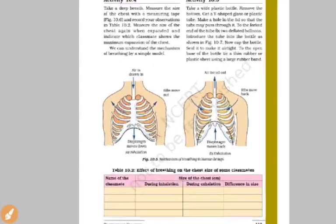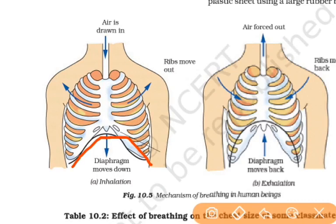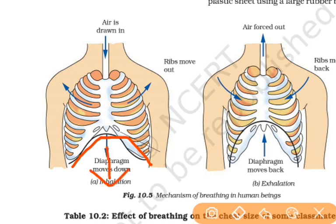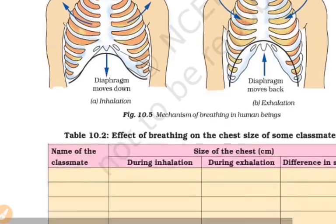The lungs are like balloons. When the ribs move out and the diaphragm moves lower, air enters — inhalation. When the diaphragm moves back up and the ribs move back in, air leaves — exhalation. This is the mechanism of breathing in human beings.